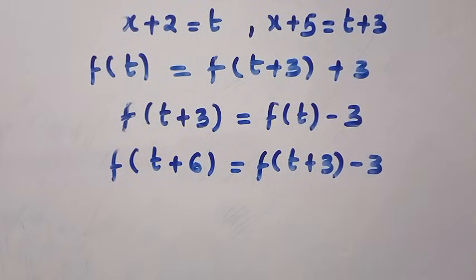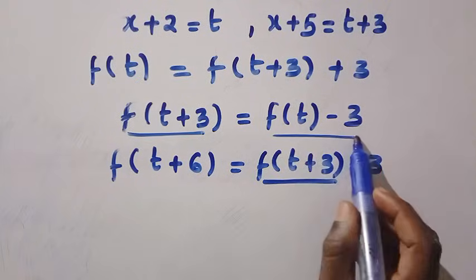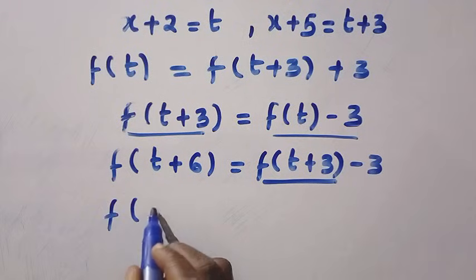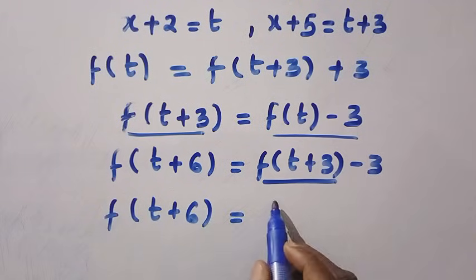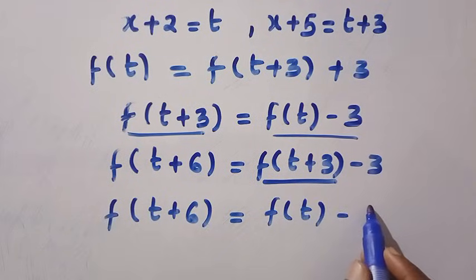And with this, f of t plus 3, which is this, is given as f of t minus 3. So by replacing it, we have f of t plus 6 equals f of t minus 6.